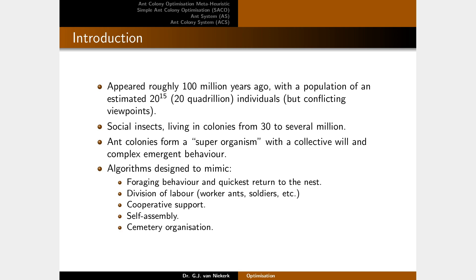Ants appeared roughly 100 million years ago with a total population of an estimated 20 quadrillion individuals, although there are some conflicting reports on this. Being social insects, they form colonies from just a few tens of individuals to several million. These ant colonies form what's known as a superorganism with a collective will and complex behavior — what's known as emergent behavior. A single ant does not exhibit any complex behavior, but as a group they exhibit this emergent super-intelligence, and it's something about this that we try to harness with ant algorithms.